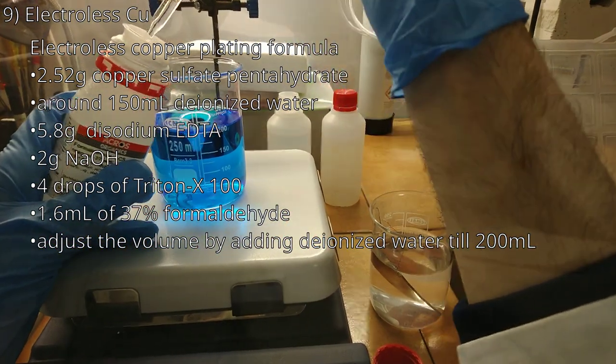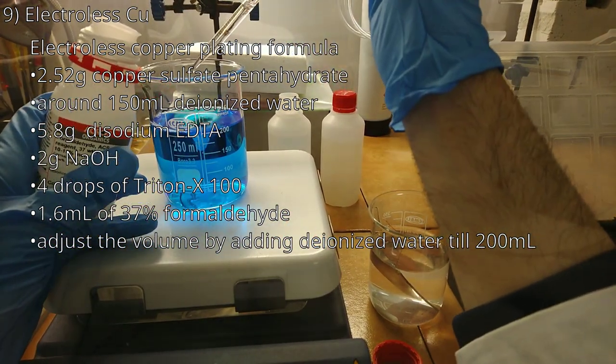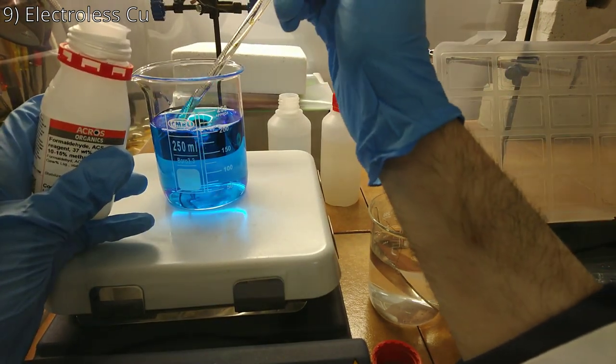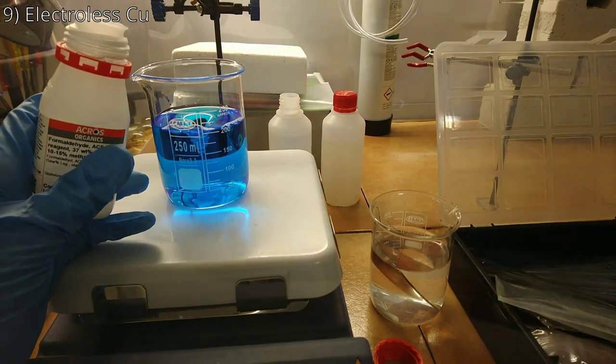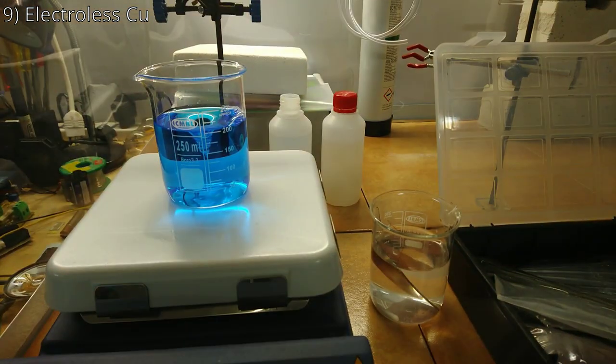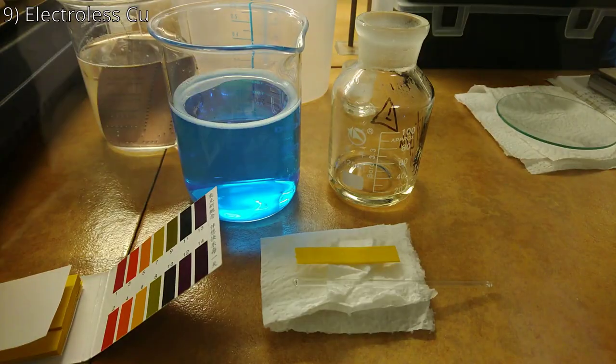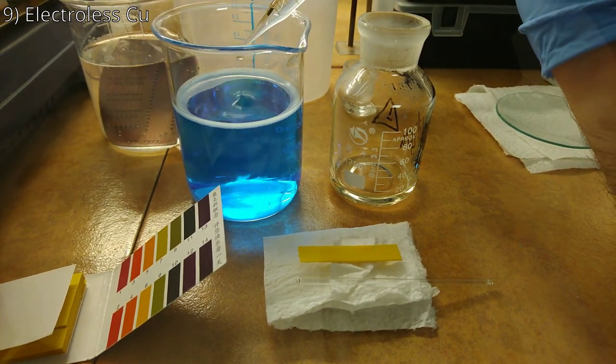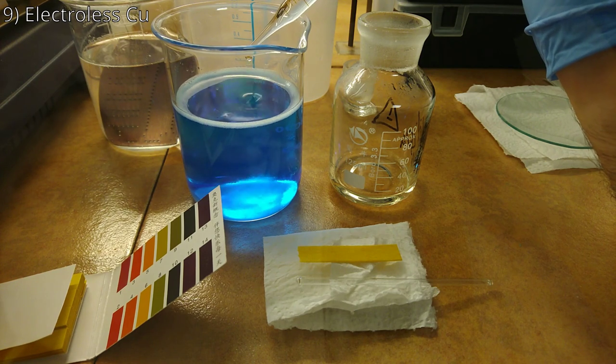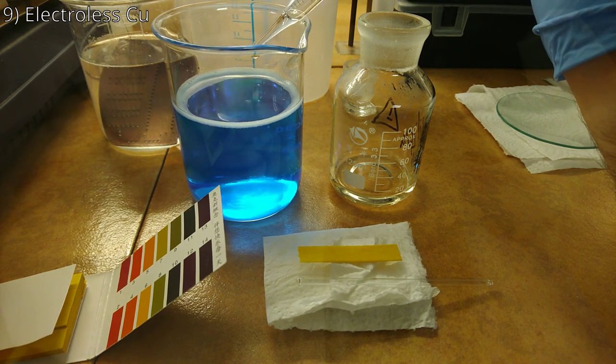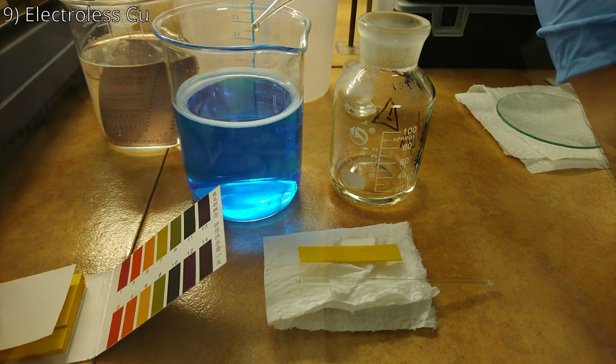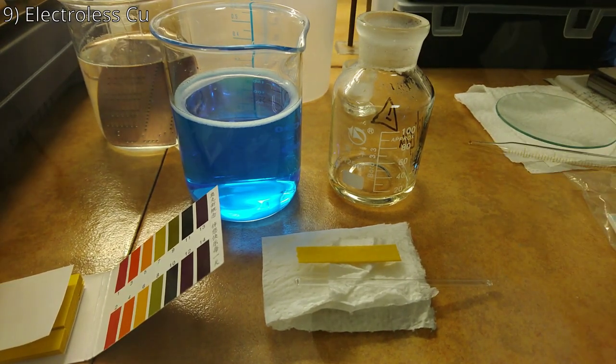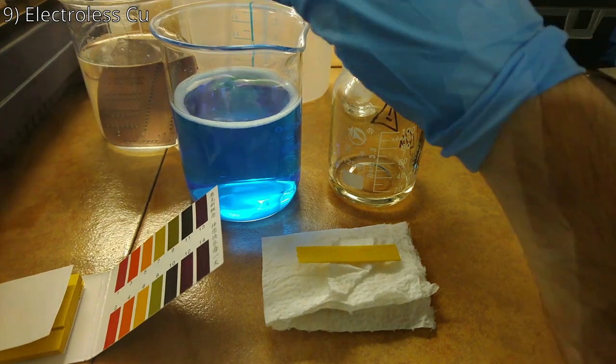Finally, add 1.6 ml of 37% formaldehyde. You should prepare this solution when you are ready to make a PCB, as the formaldehyde decomposes via the Cannizzaro reaction in alkaline conditions. After use, this solution can be stored, but it needs to be acidified with concentrated sulfuric acid, bringing it to a strongly acidic pH. In this condition, it should last around 1 year, in a well-closed container, to prevent the escape of volatile formaldehyde.